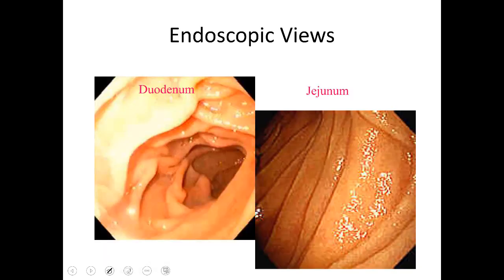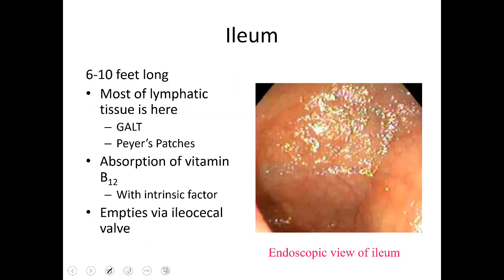We can see endoscopically what the duodenum versus the jejunum looks like. The ileum is the last or terminal portion of the small intestine. Most of the lymphatic tissue is here — known as GALT, or gut-associated lymphoid tissue, with clusters called Peyer's patches. It's also in the ileum that we absorb vitamin B12, as long as intrinsic factor is linked with it.